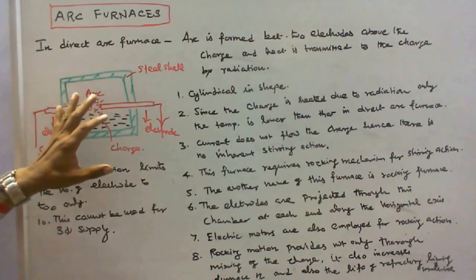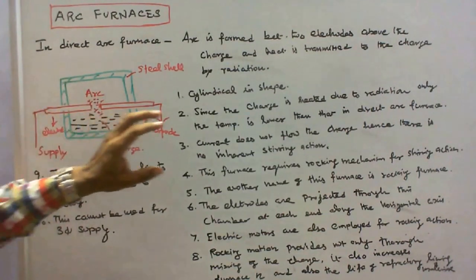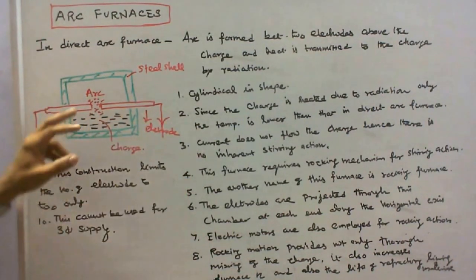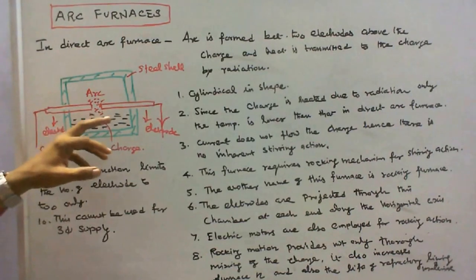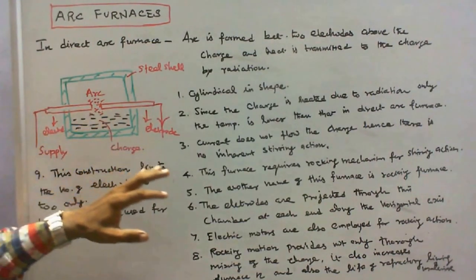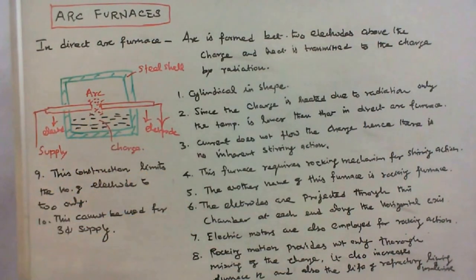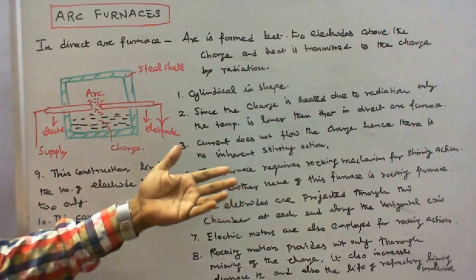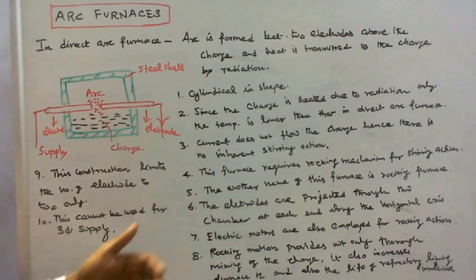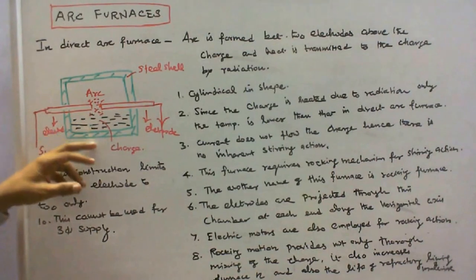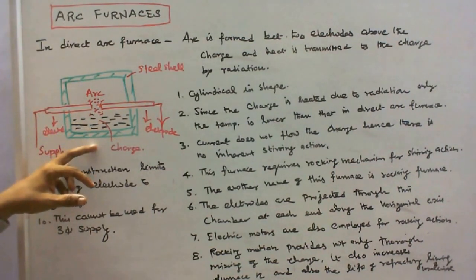Since the charge is heated due to radiation only, therefore the temperature is lower than that in direct arc furnace. Current does not flow through the charge, hence there is no inherent stirring action. The furnace requires rocking mechanism for stirring action. The another name of this furnace is rocking furnace.